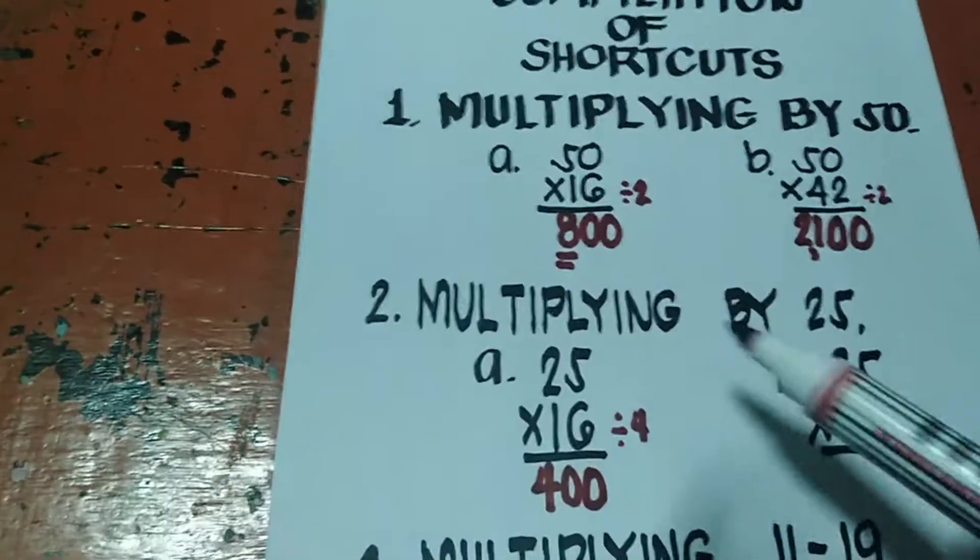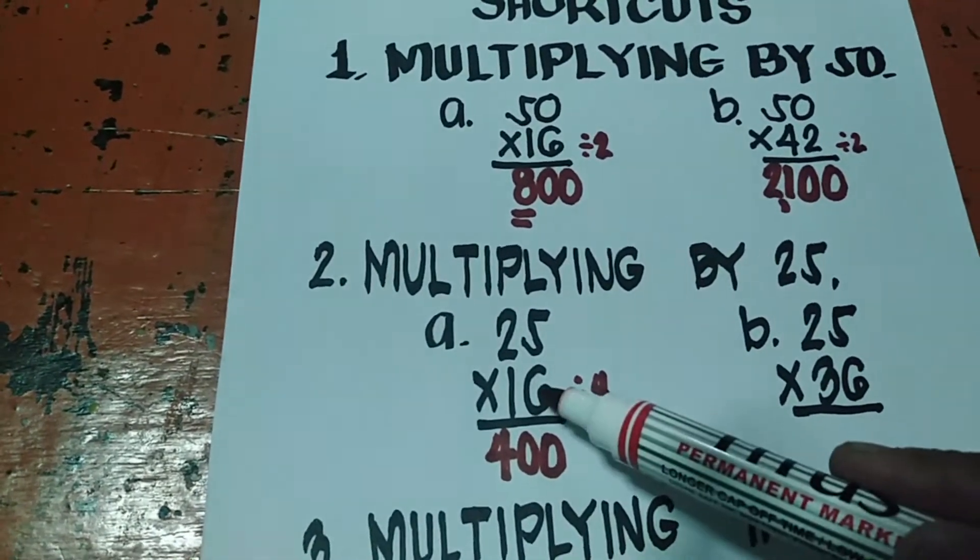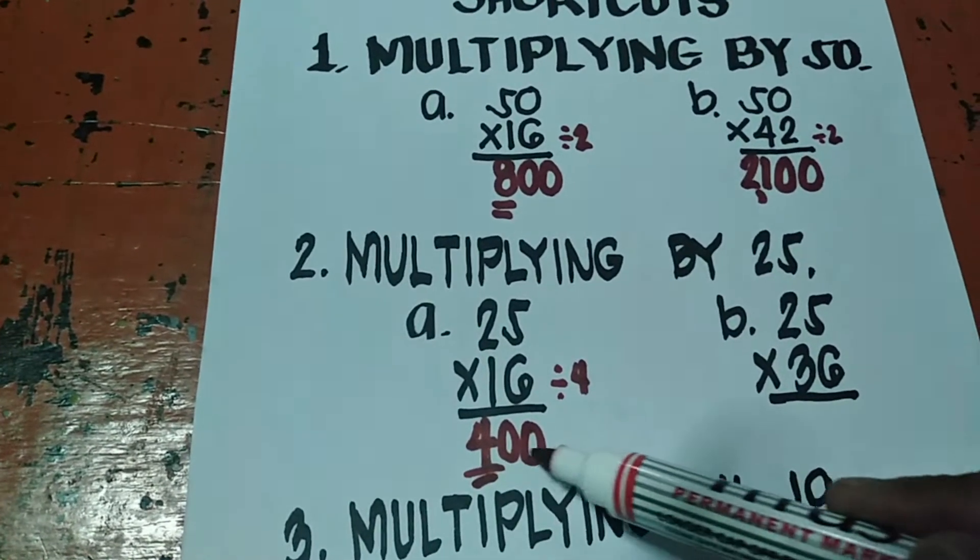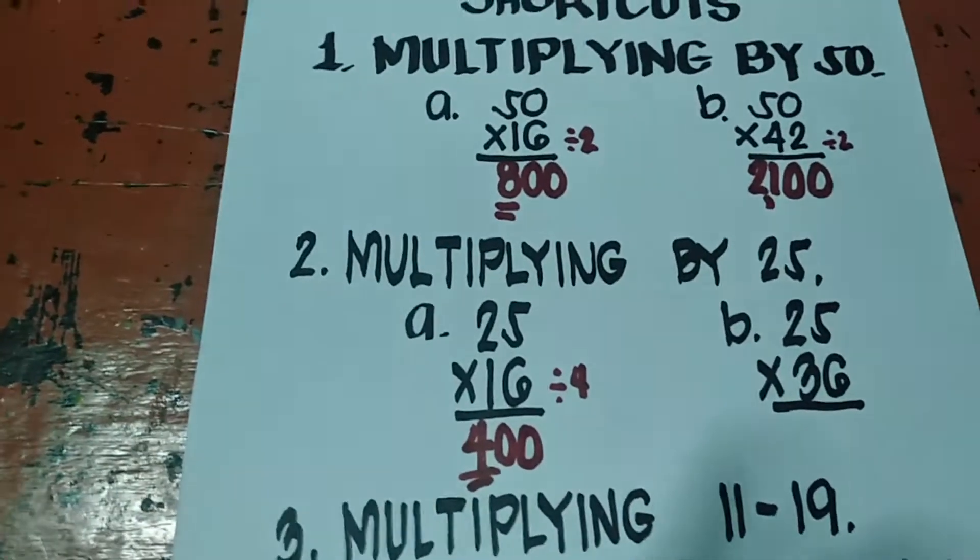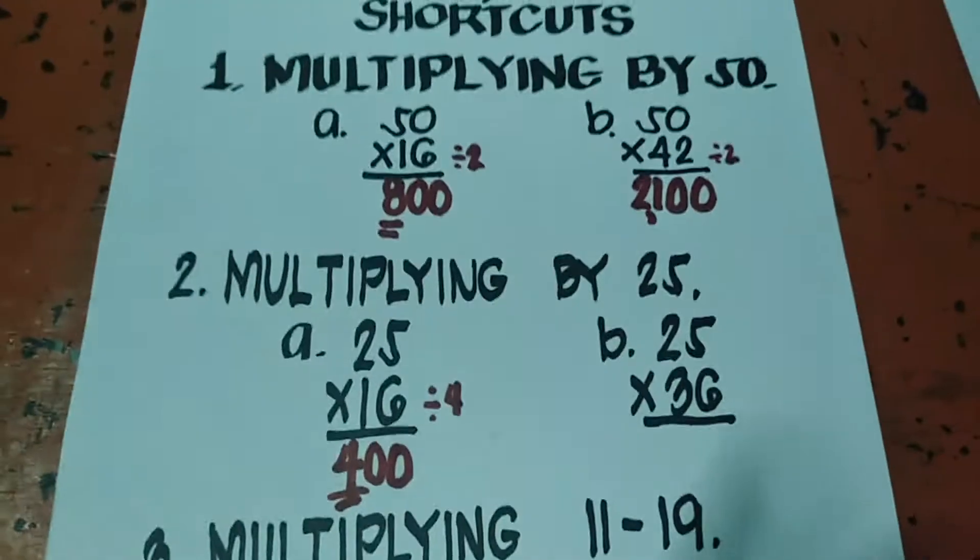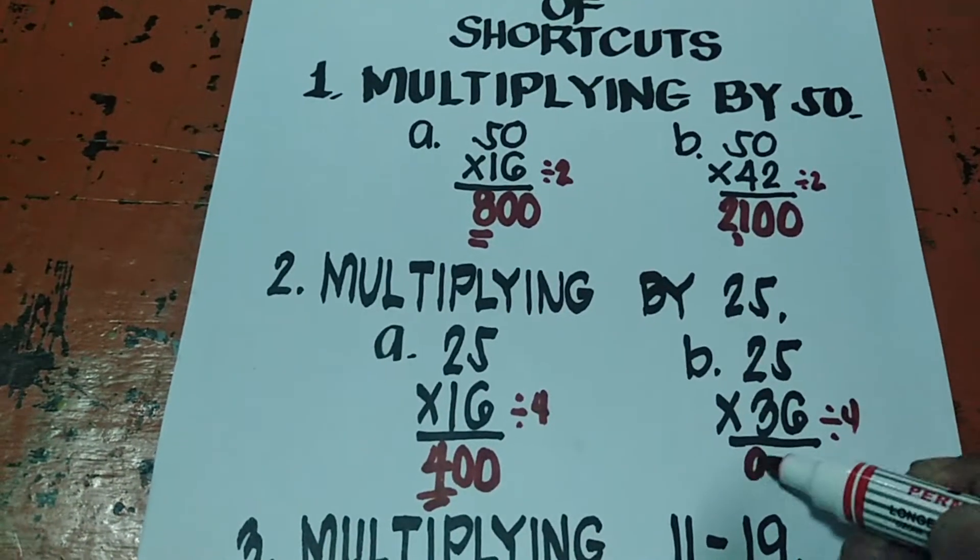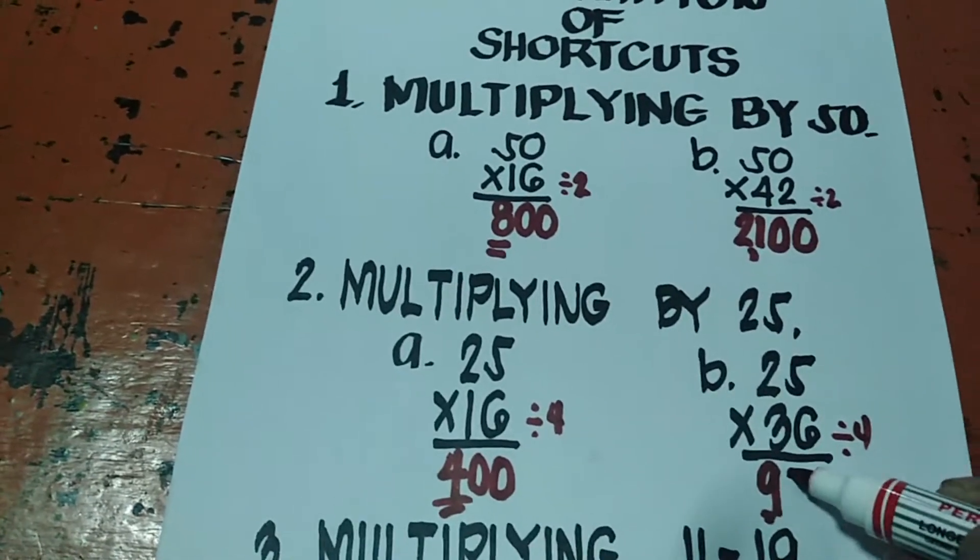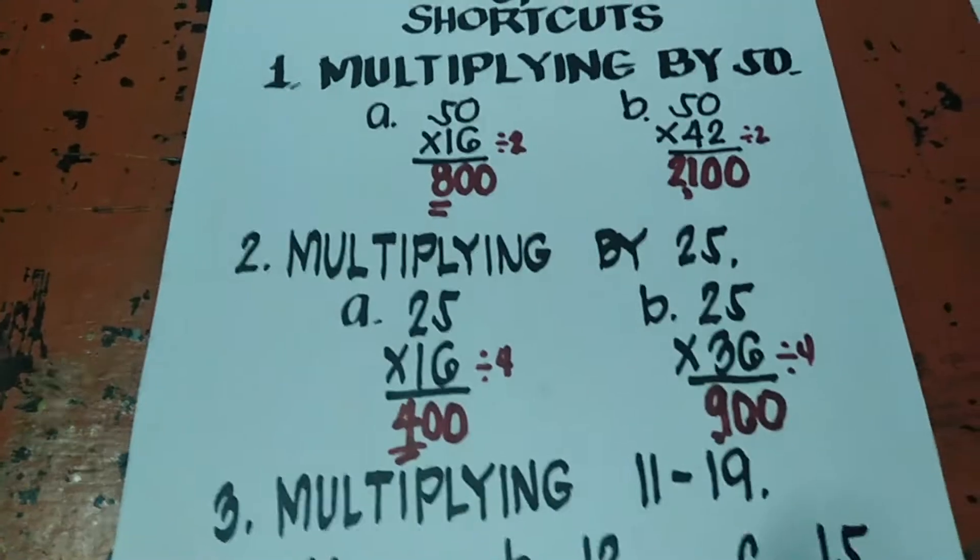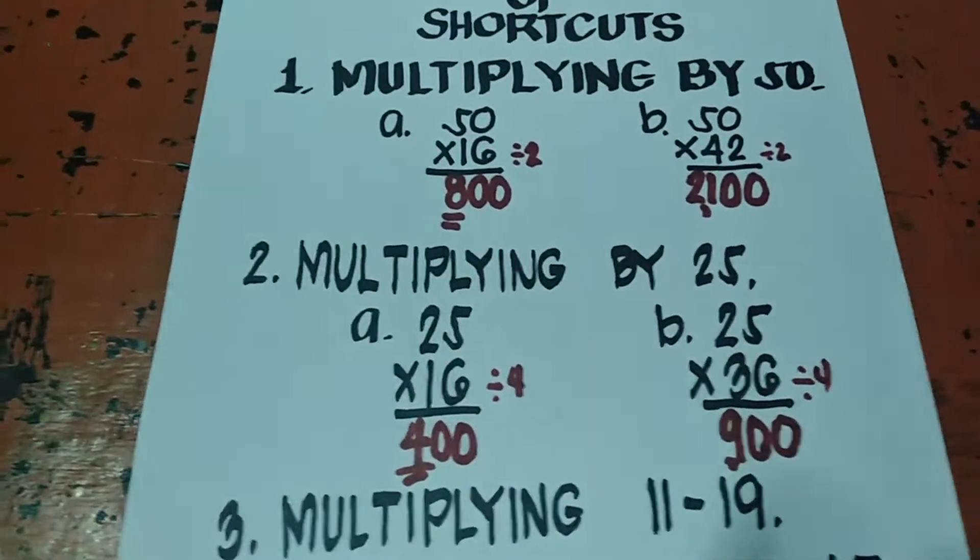Ulitin ko. Pag multiplying by 25, kung multiplier niya na 16, he divides sa 4. Kaya 16 divided by 4 is 4. Tapos magdadagdag ka lang ng 1,0. Kailangan divisible by 4, yung multiplier niya. Sa B, 25 times 36, divided by 4 is 9. Tapos magdadagdag ka lang ng 2,0. So 900.